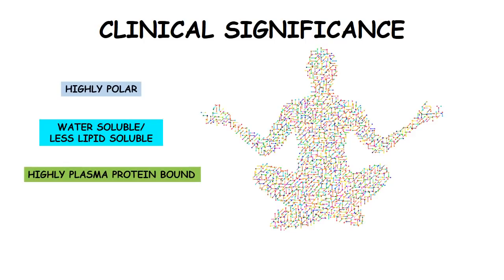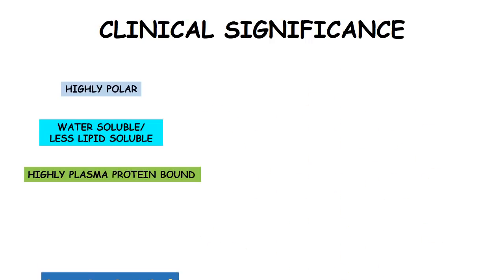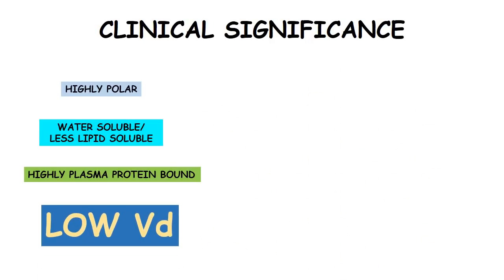If a drug is extensively bound with plasma proteins, then obviously the size of the drug in combination with the protein becomes much larger, so it cannot pass through the small pores of the biological membranes. So again in that case the volume of distribution becomes low.